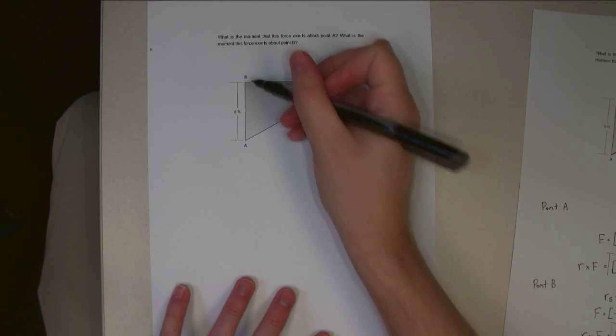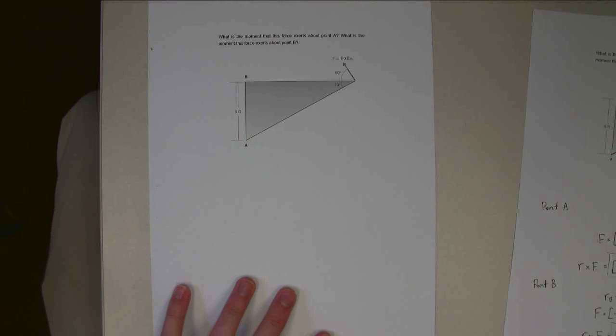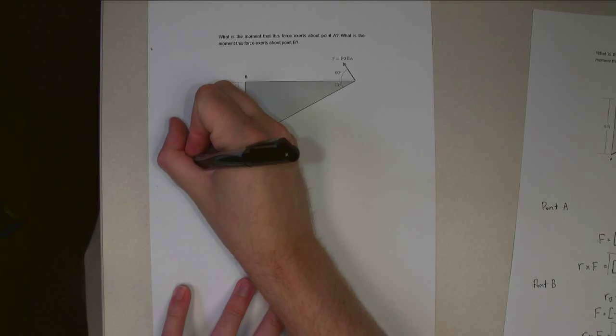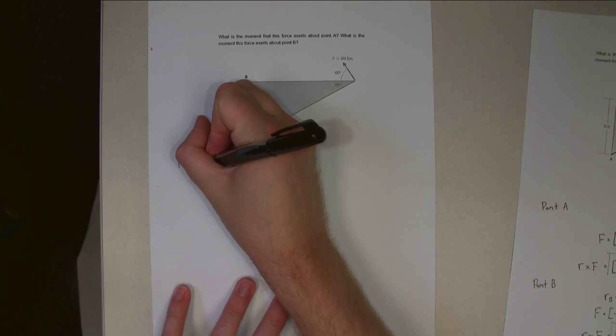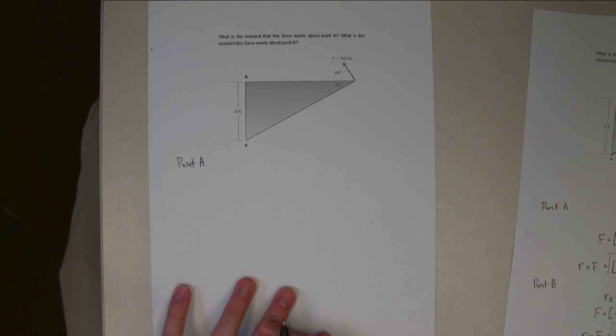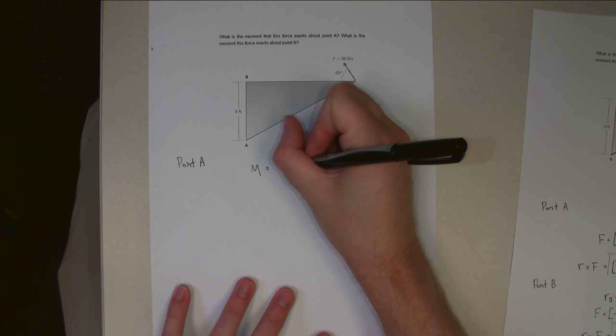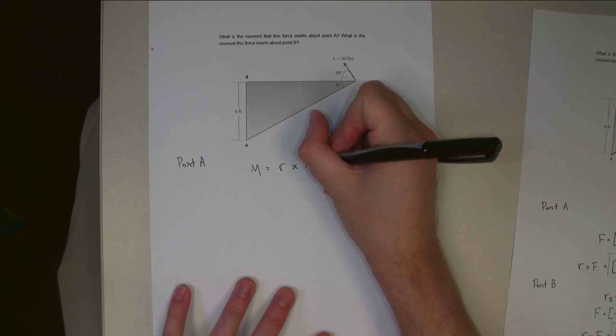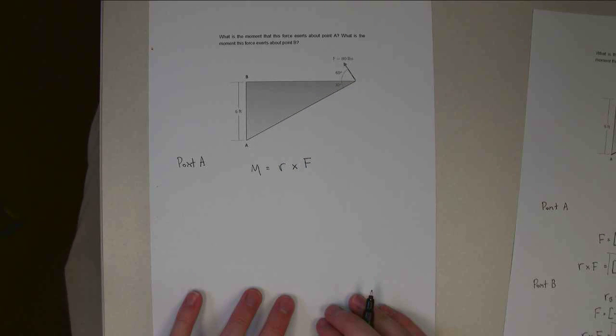So we've got point A, point B. We're going to have to do each one of these one at a time, so we'll start with point A. We're going to use the vector method to solve it this time, which means that the moment is equal to R cross F, and we need to find the R and the F vectors.